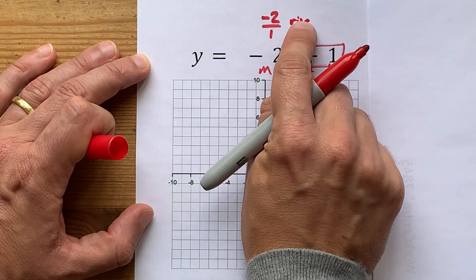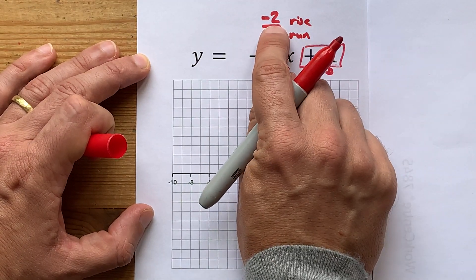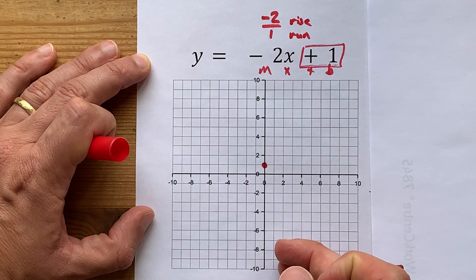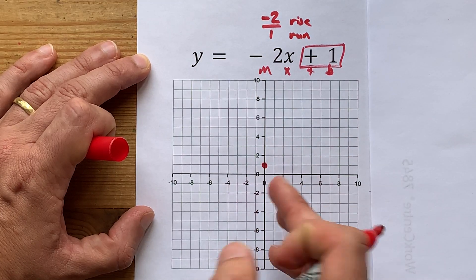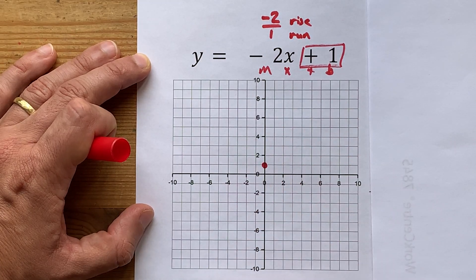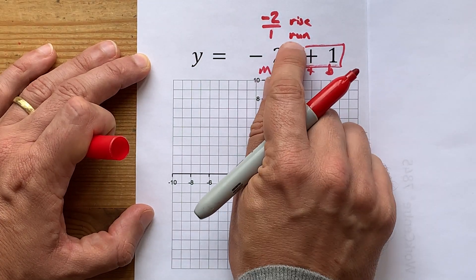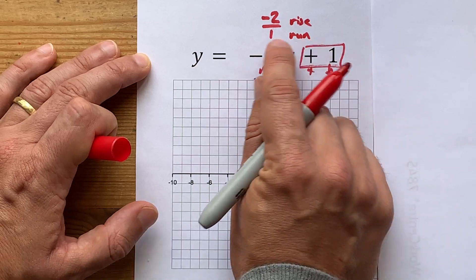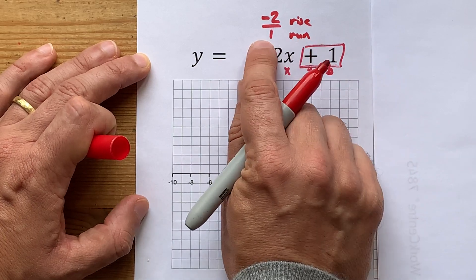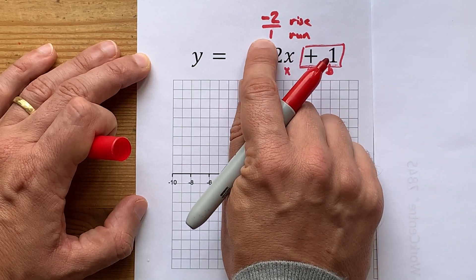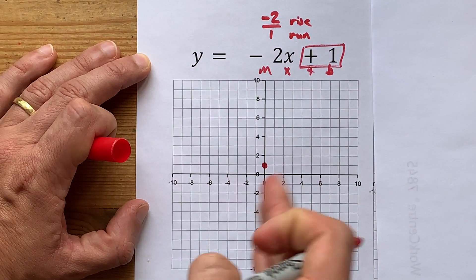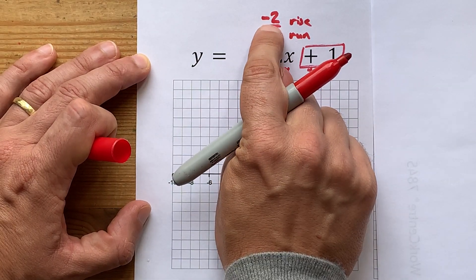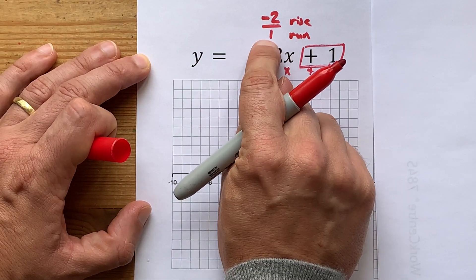The rise of negative 2 tells me we're going to go down 2 units, or down 2 boxes. And the run of positive 1 means we're going to go to the right. So the pattern is: down 2, right 1.